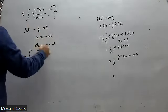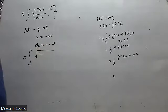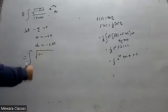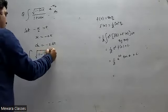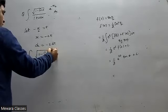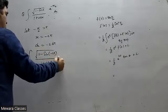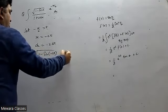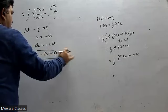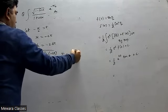We get 1 minus sin minus 2t upon 1 plus cos minus 2t, and dx is e to the power t times minus 2 dt.